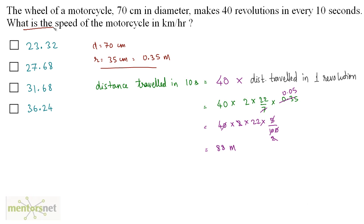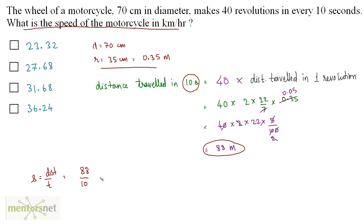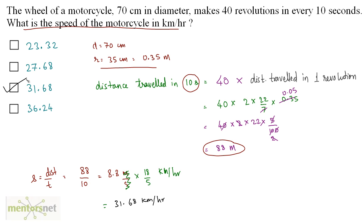Now we want the speed of the motorcycle in km per hour. Speed is equal to distance upon time. The distance is 88 meters travelled in 10 seconds, so that is 88/10 = 8.8 meters per second. To convert to kilometers per hour, multiply by 18/5, and that gives 31.68 km per hour. So the answer is Option C.